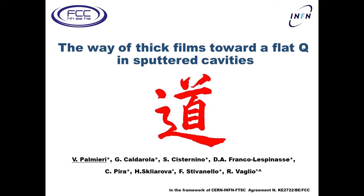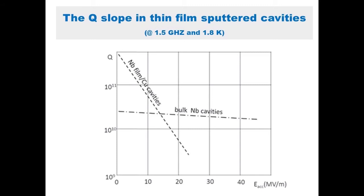This work was performed in the framework of the CERN-INFN collaboration for future circular colliders. The work refers to the usual 20-year-old problem that niobium sputtered copper cavities are affected by a Q-slope. At the current state of technology, the only cavities that can be used at the highest accelerating fields are bulk niobium cavities.